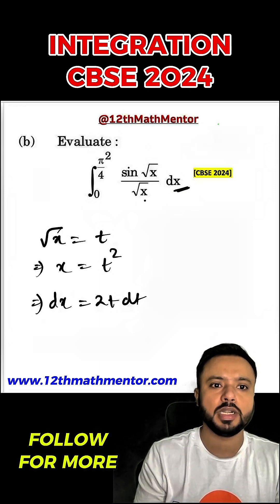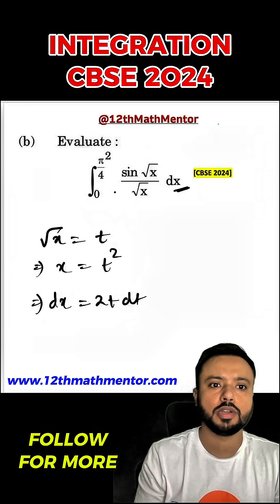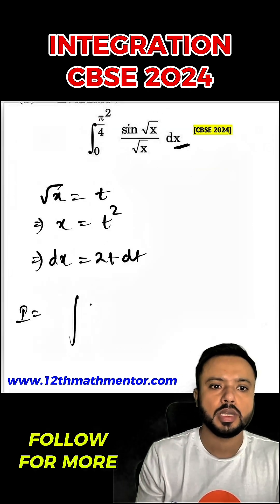And all of these root x can be replaced by t. So I'm going to rewrite this particular integral in terms of t. So I would be equal to integration of sine t upon t into 2t dt.